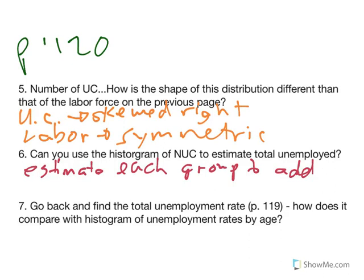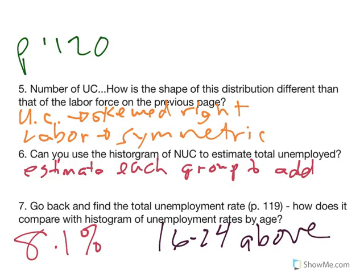Number seven might have seemed a little bit difficult. It says go back and find the total unemployment rate for 2012. If you turn back to page 119, that's where the data is coming from in that teeny tiny text. The top line is the total for 16 years and over. If you go all the way to the right, you see percent of labor force under the unemployed, and that's where I get 8.1%. So the overall unemployment rate is 8.1. When you look at the unemployment rate chart on page 120, you'll notice that only the 16 to 24 year olds are above that, the 25 to 34 year olds are about equal to that, and everybody else 35 and up is below that rate of 8.1%. So the unemployment mainly seems to lie in that 16 to 24 range.